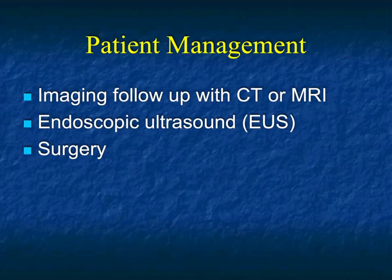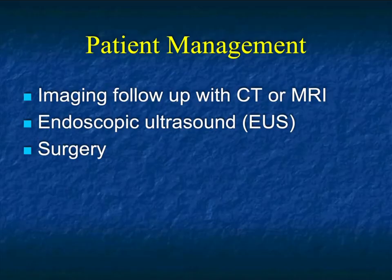Regarding patient management: when you think it's a small lesion with no criteria — no septations, no nodularity — follow-up at six to twelve months. But how often do you follow? Any suspicion at all, any family history at all, go to EUS to make sure there's no underlying abnormality suggesting high-grade dysplasia.